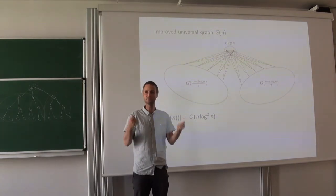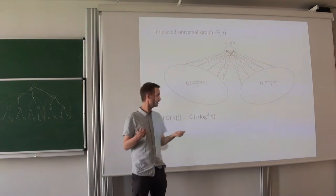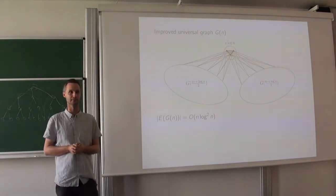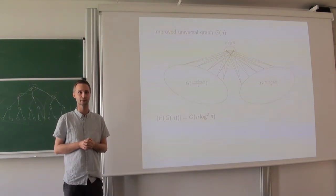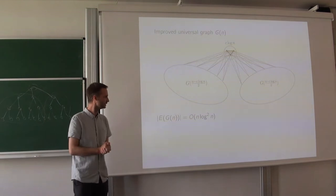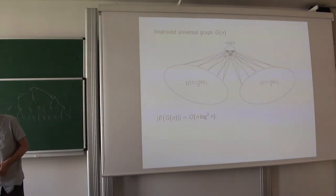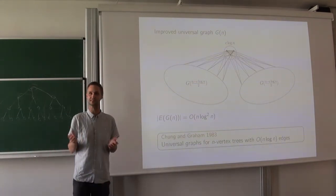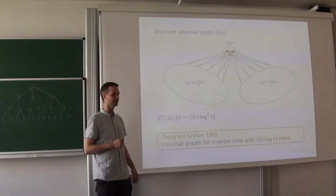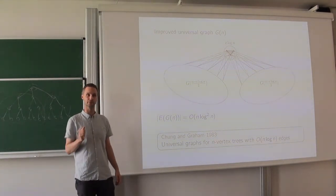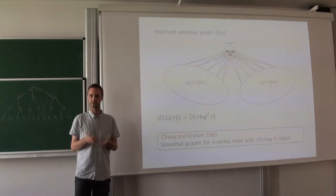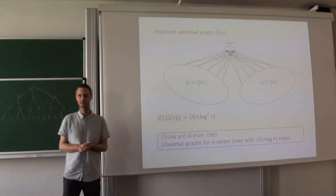In each level I put at most c log n times n edges, and there are at most log n levels. So the total number of edges is at most n log² n in this simple and natural construction. This will be the basis of how we deal with trees, bounded tree-width graphs, and so on. For trees it's almost the best possible. It turns out there is a better but more complicated construction using only n log n edges instead of n log² n — that's a theorem of Chung-Graham from the early 80s. But up to a log n factor, this is essentially best possible.